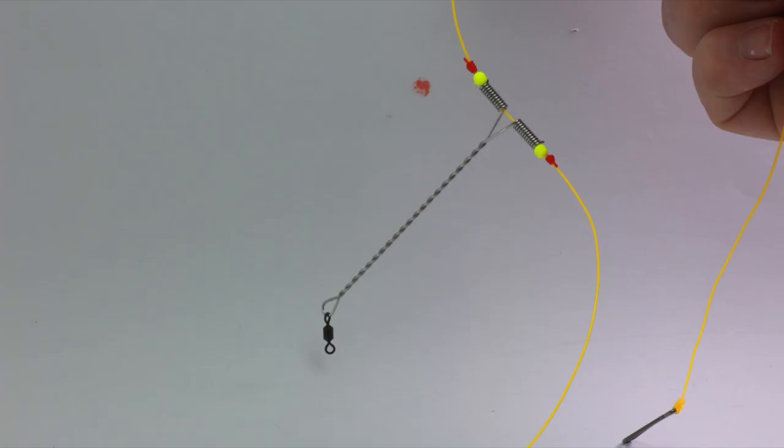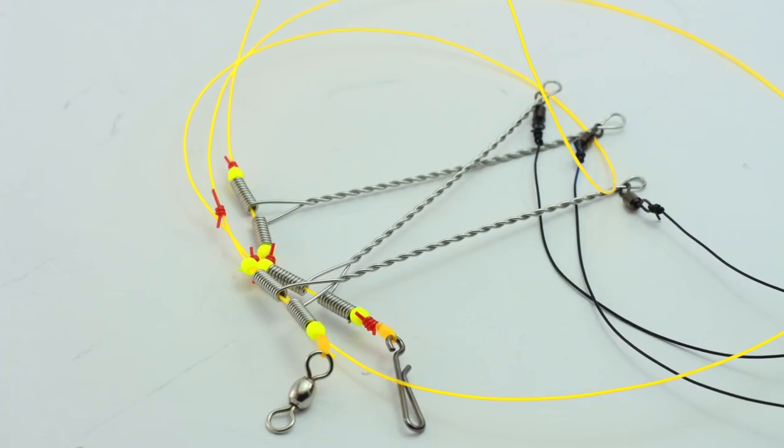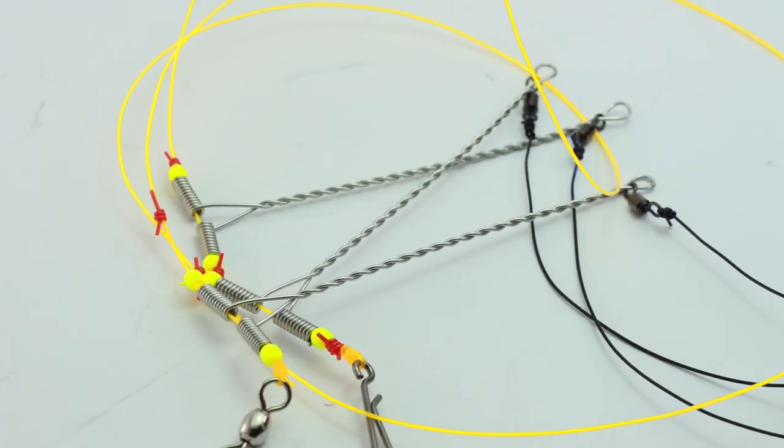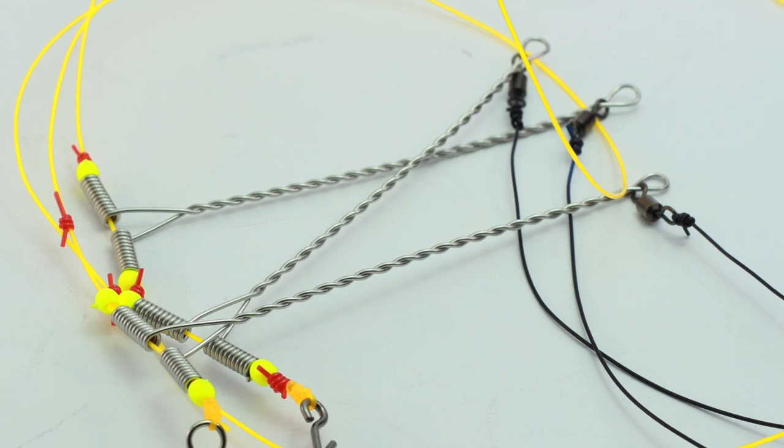So the advantage of this, particularly if you've got a little bit of run on the water, is it will take the hook baits away from the main line. Not a bad rig, this one, for black bream actually.